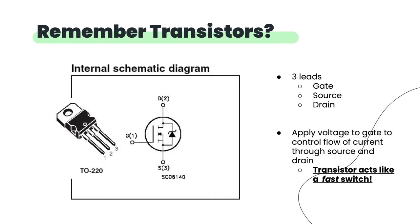The important things to remember about a transistor: there are three terminals — the gate, source, and drain. By applying a voltage to the gate, you can control the amount of current flowing from the source to the drain, creating a very fast electrical switch. We've discussed why we prefer electrical switches over mechanical ones — they're smaller, you don't need to debounce them, and you can control them through code.